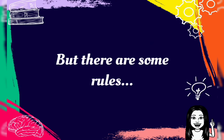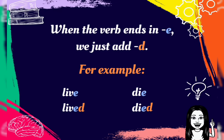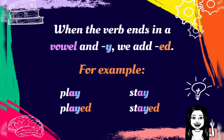But there are some rules. When the verb ends in "-e", we just add "-d". For example, live — lived, die — died. When the verb ends in a vowel and "-y", we add "-ed". For example, play — played, stay — stayed.